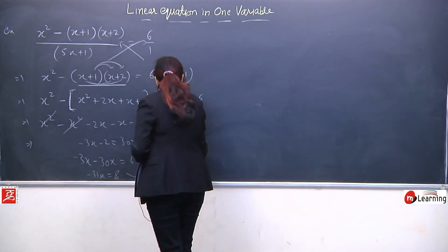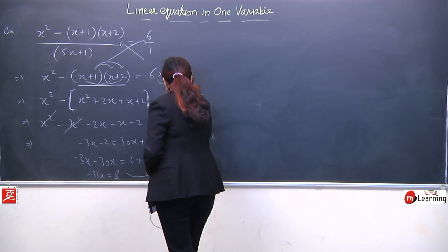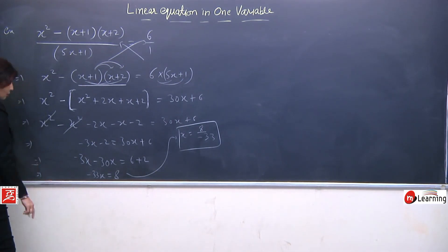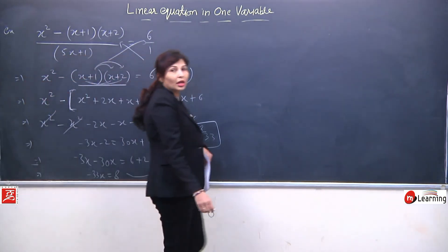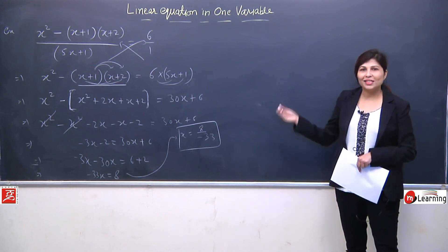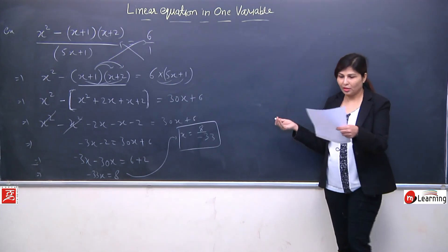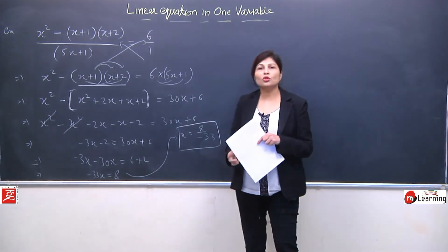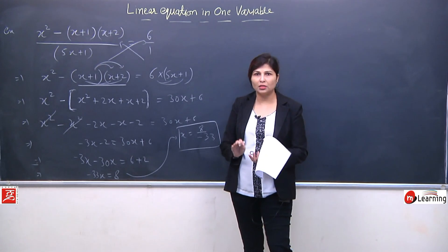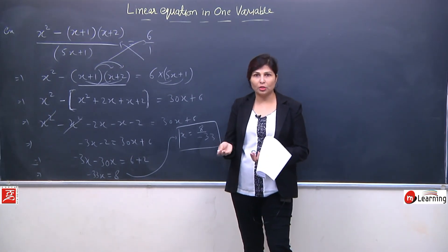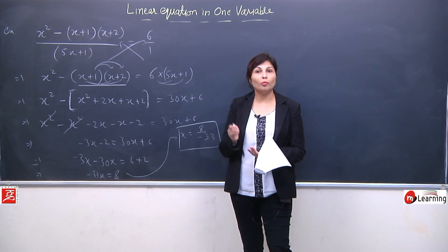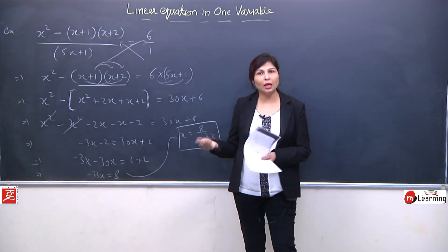x² minus x² is 0. minus 2x minus x is minus 3x, minus 3x minus 30x is minus 33x, equal to 6 plus 2 is 8. So x is equal to 8 upon minus 33 — yeh aapka answer hai. Thoda ajib sa answer aaya — agar aapko lagta hai galat hai toh substitute karke check karein, but it is the right answer. Toh aap isko ghar pe practice karein. I have covered almost all kinds of examples based on cross multiplication. Ab jo hamara agla lecture hoga, woh problem sums pe based hoga, kyunki linear equation ka major application problem sums mein hota hai.